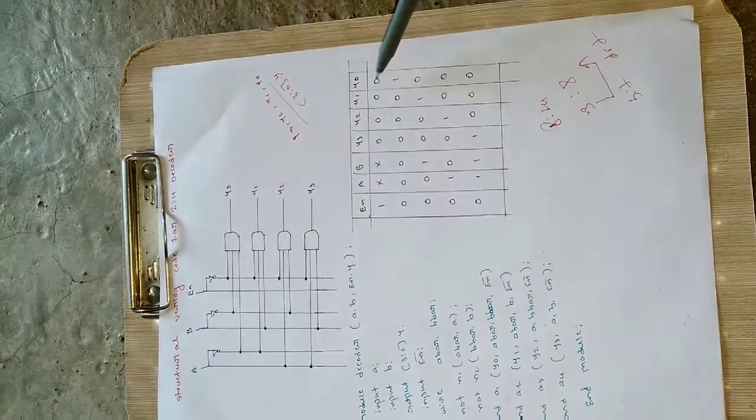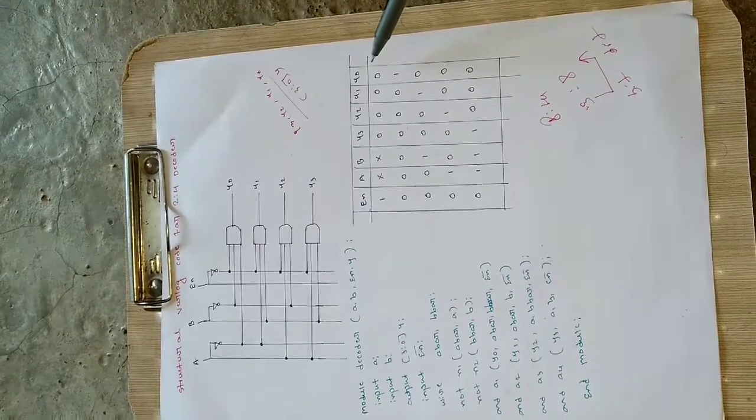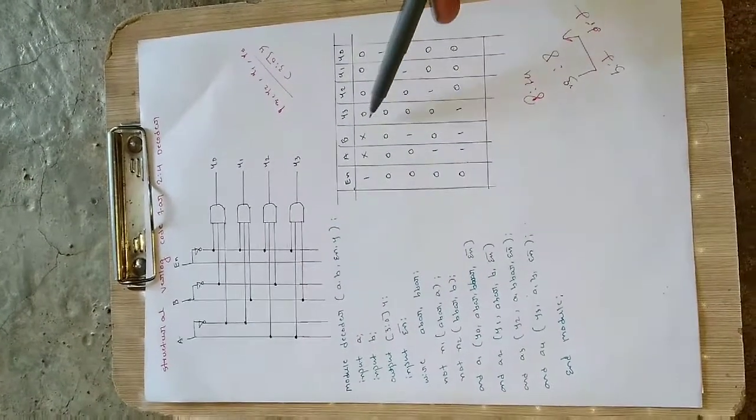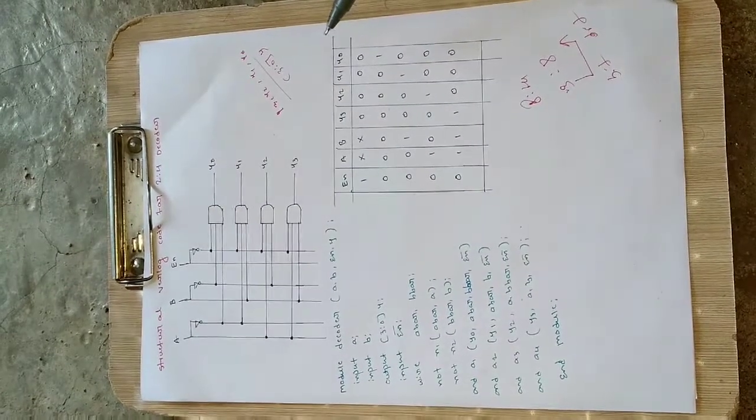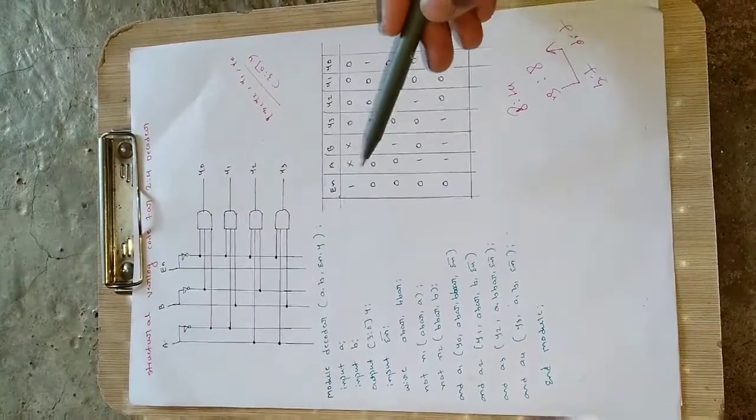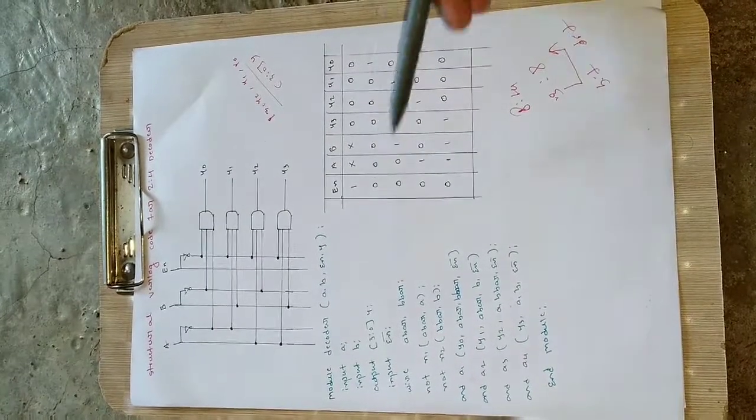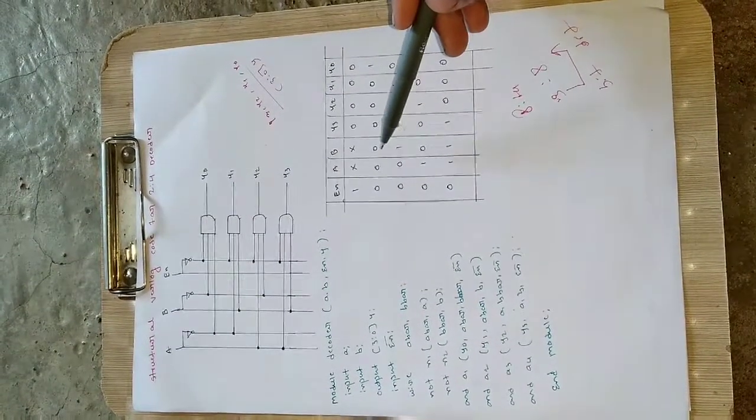If enable is 1, the 2-to-4 decoder is non-operational, so the outputs will be all zeros. It will not care about the values of A and B. It will work if and only if enable value is 0.